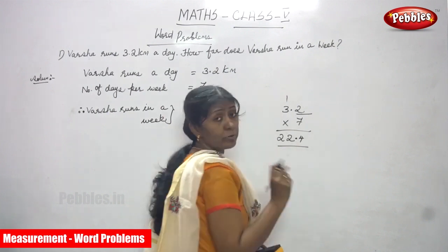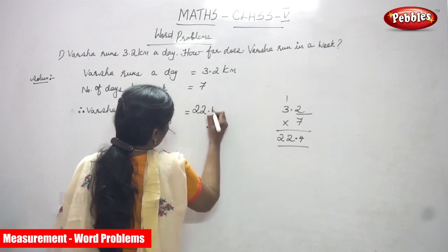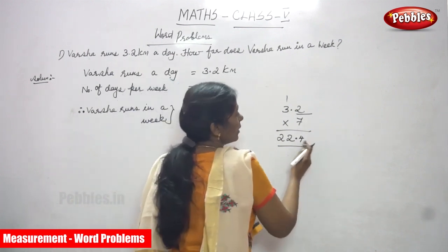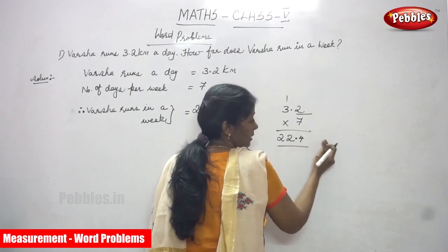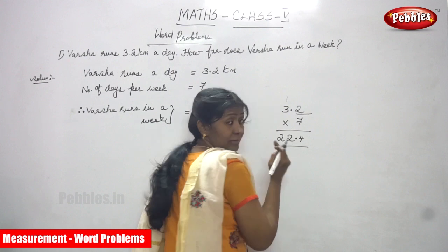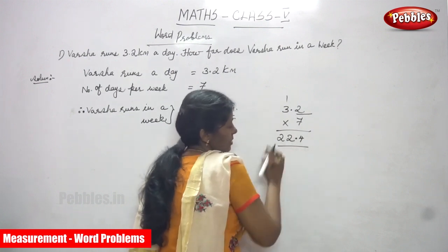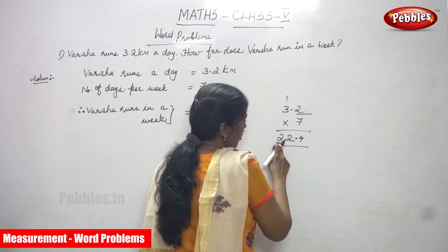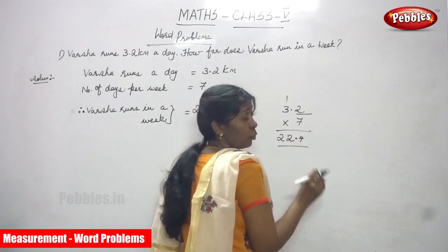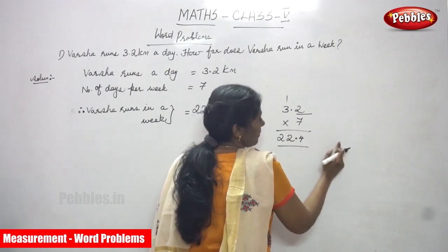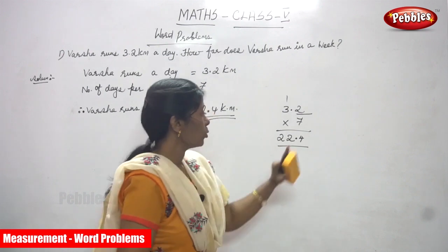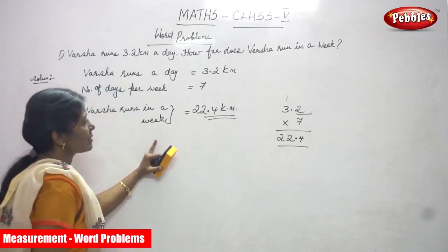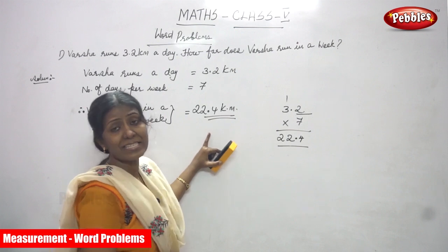So the answer is 22.4 kilometers. You can also think of it this way: 22 is the whole number, then put a decimal point, then write 4, giving 22.4. Just move the decimal point from right to left in the result. Therefore, Varsha runs 22.4 kilometers in a week. That is the correct answer.